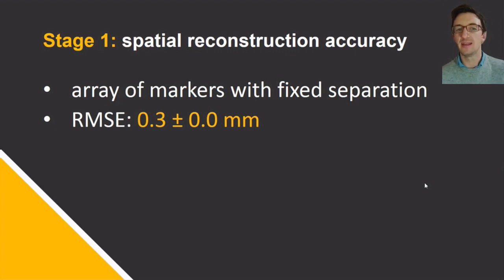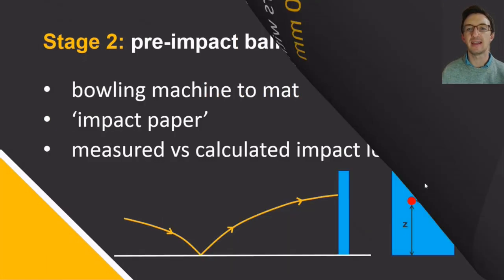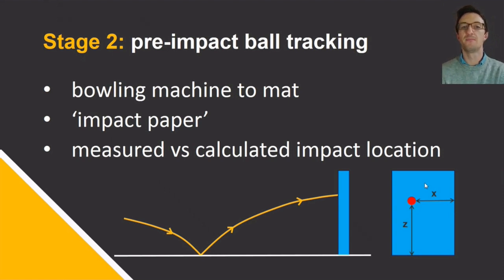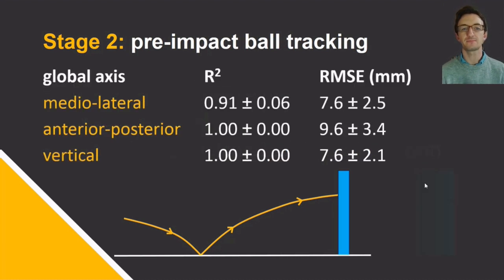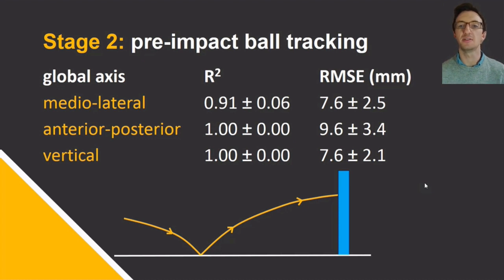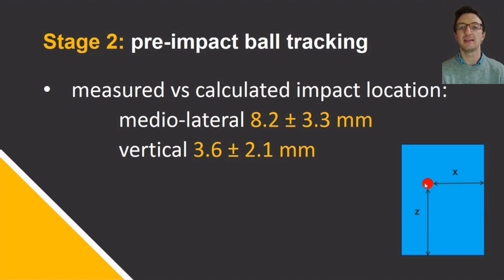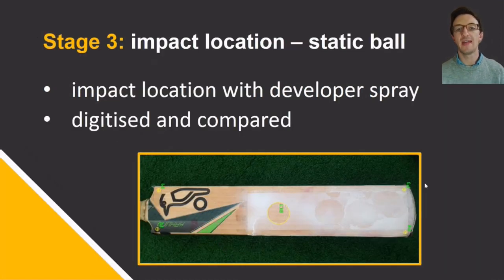We were pleased with the root mean squared error, so we moved on to stage two: pre-impact ball tracking. We fired the ball from a bowling machine into a mat, fitting the pre-impact curves and measuring impact location on impact paper without the added complexity of a dynamic bat. The curve equations fit satisfactorily well, with root mean squared errors below a centimetre in all directions, and measured versus calculated impact locations on the stationary mat were less than a centimetre on average in both directions.